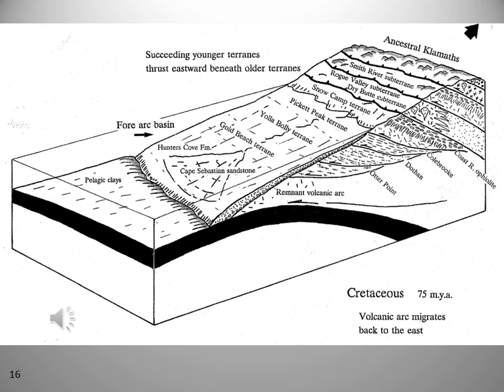Coastal and tectonically displaced terrains, also called the Snowy Camp, Pickett Peak, Yolla Bolly, Gold Beach, and Sixes River, are small coastal subterrains of the Franciscan and Dauphin Belts of the southwest Oregon terrains. These terrains were thrust beneath the western Klamath terrain from latest Jurassic to Cretaceous, 150 to 75 million years ago.